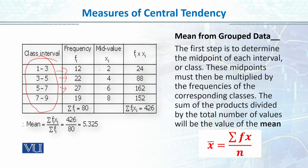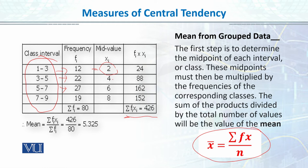The formula for mean from grouped data is summation of fx over n. fx means you multiply f by x, and then take the summation — that is, the total. So 12 multiplied by 2 is 24; similarly, I will multiply each frequency value with the corresponding x (midpoint) value and get the total summation of fx, which is 426. I plug the values into the formula: summation fx divided by n — or equivalently by summation f, because it is the same thing. So 426 divided by 80 equals 5.325. If someone asks me what was the average of those 80 students on that test, I can report that 5, or 5.325, was the mean value in my data. This is how we calculate mean for grouped data.